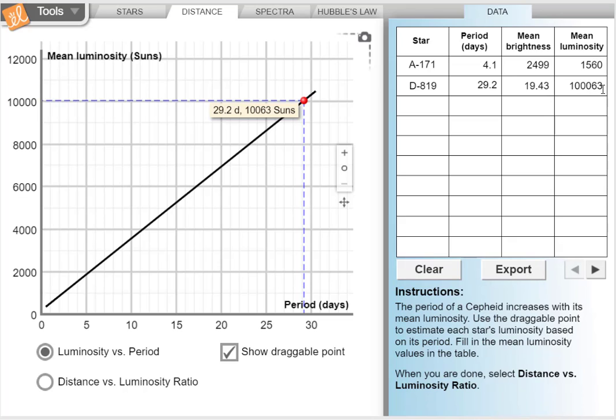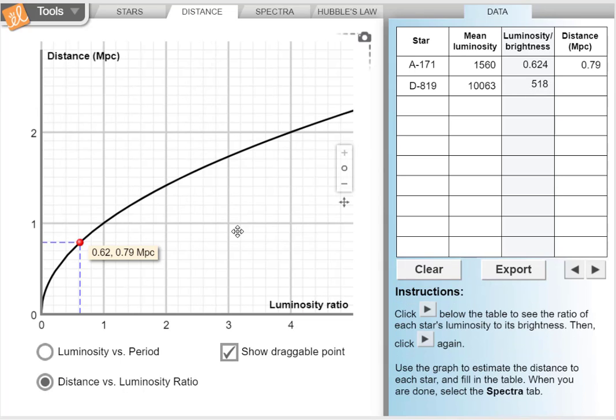So we can see that star D819 is making way more light than star A171, even though it appears much dimmer to us. And because of that, we can get a luminosity ratio of 518, which means that its luminosity or its brightness has decreased by a factor of 518.